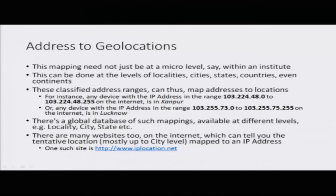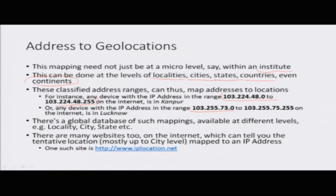This kind of mapping is not restricted to the level of an institute — it can be done for localities, cities, states, and countries, even at the continent level. For example, any IP address on the internet in the range 103.24.48.02 to 103.24.48.25 has to be a device connecting from Kanpur, because this IP range has been assigned to Kanpur. Similarly, the range 103.255.73.02 to 103.255.75.255 is allocated to Lucknow, so any device with an IP address in this range is connecting from Lucknow.